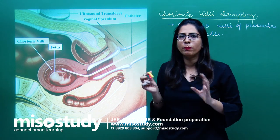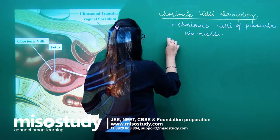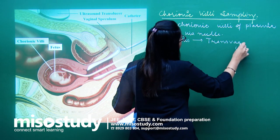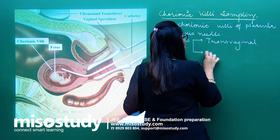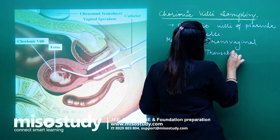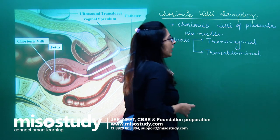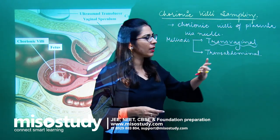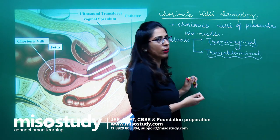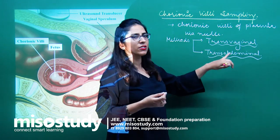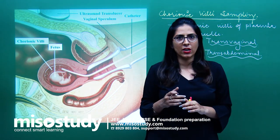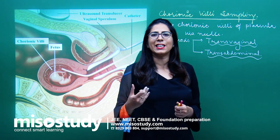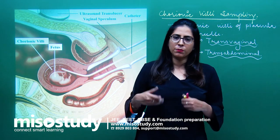There are two methods for chorionic villi sampling: one is transvaginal and the second is transabdominal. The doctor decides whether the lady will be going for transvaginal or transabdominal chorionic villi sampling. Transvaginal means we use a catheter that passes through the vagina — this depends upon the position of the placenta. Transabdominal is where a needle, just like in amniocentesis, is inserted into the abdomen which passes through the uterus.